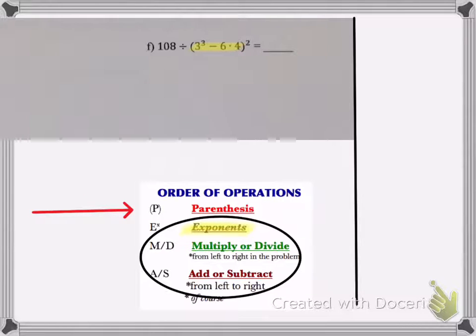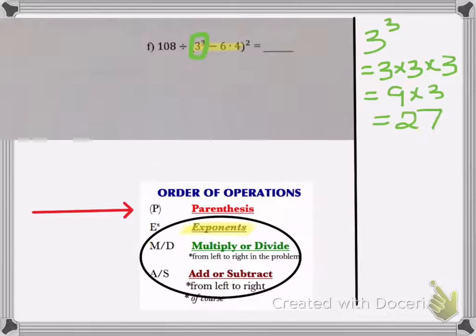So I will do exponents first. The first exponent I see is 3 cubed, which is 3 times 3 times 3, which is 27. So my new expression is going to have 27 in the spot where the 3 cubed was.